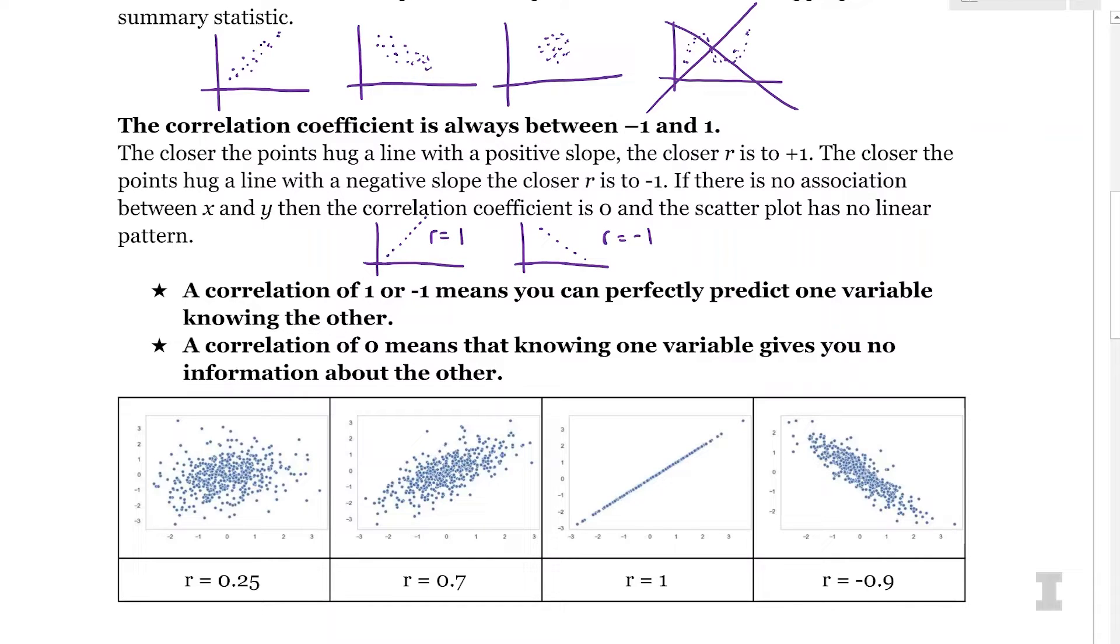And then lastly, it says if there's no association between x and y, the correlation coefficient is zero and the scatter plot has no linear pattern. So generally we see kind of just this big blob of points with no clear linear association. That would be when r is zero.